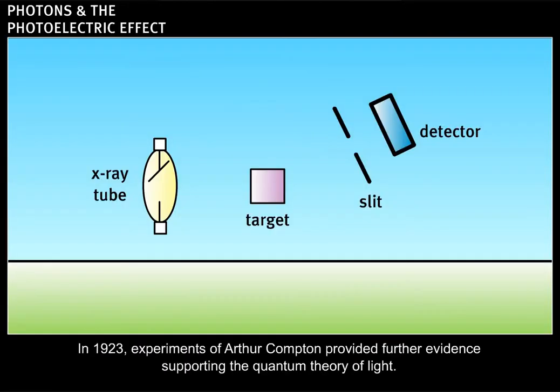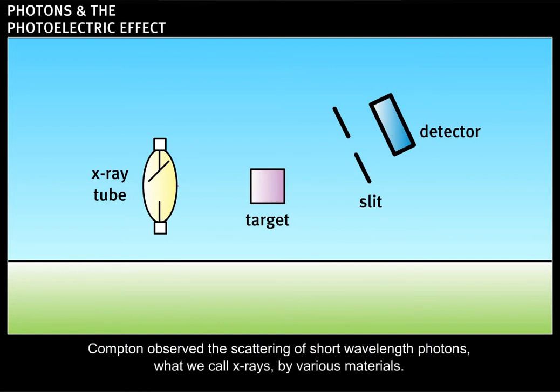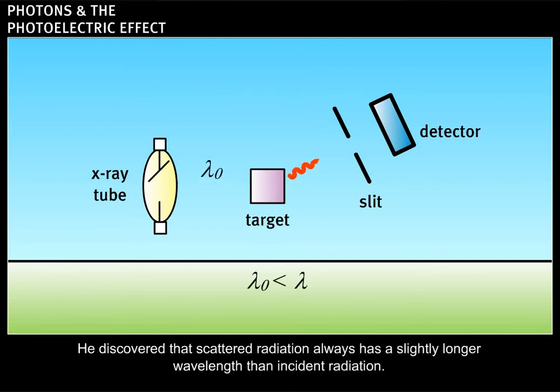In 1923, experiments of Arthur Compton provided further evidence supporting the quantum theory of light. Compton observed the scattering of short wavelength photons, what we call x-rays, by various materials. He discovered that scattered radiation always has a slightly longer wavelength than incident radiation.